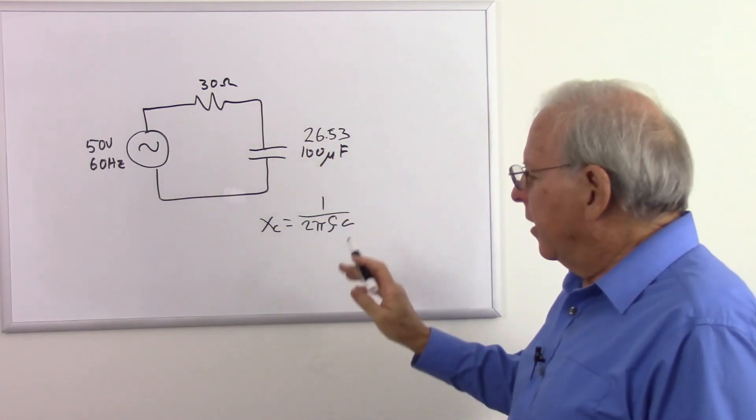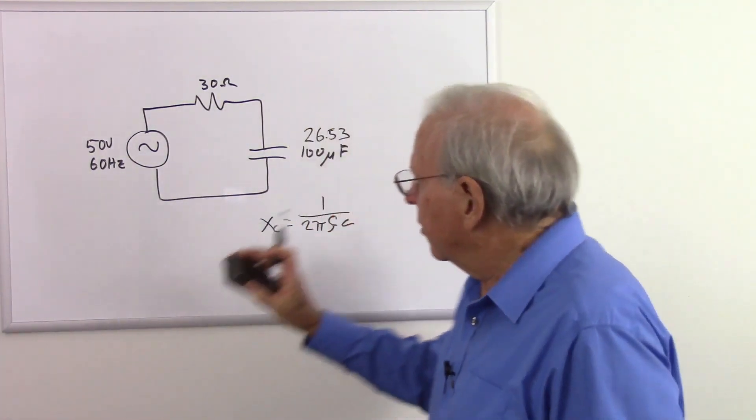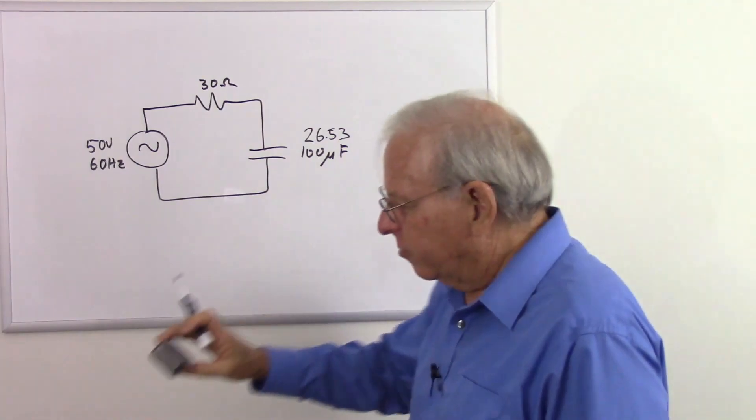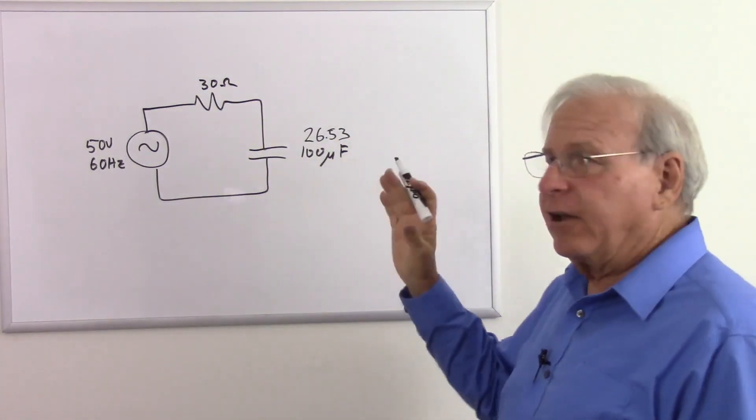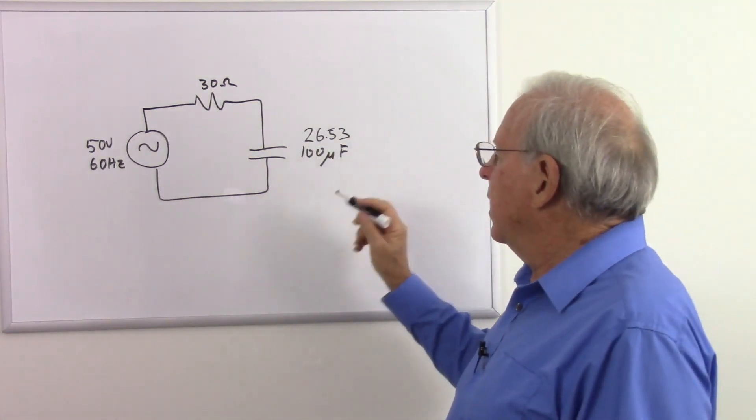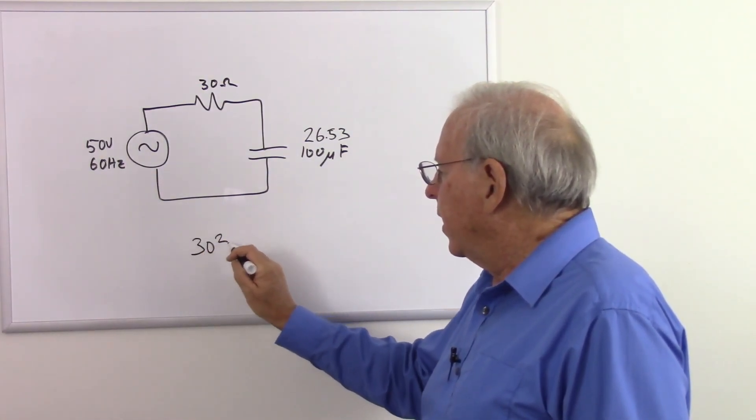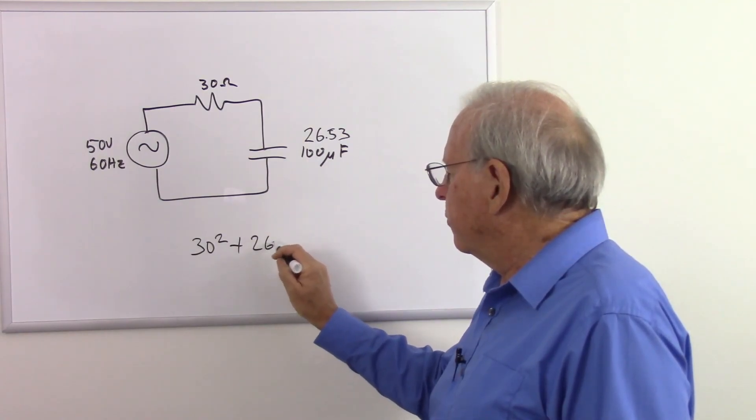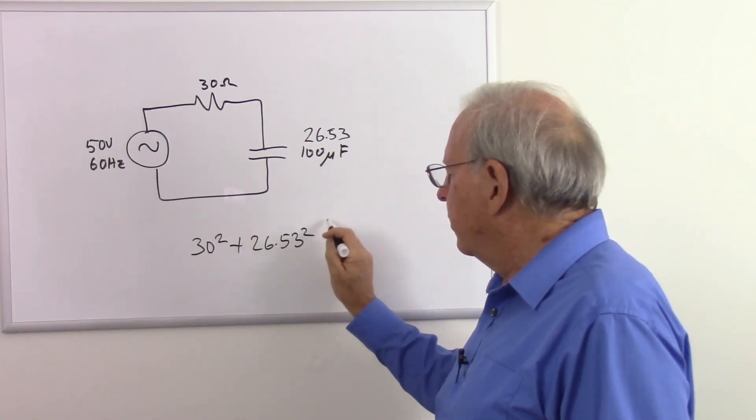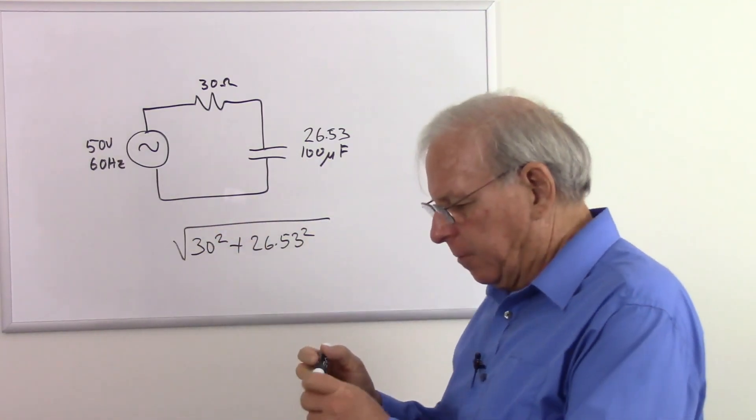Now what I need to do is find out what the voltage is across the capacitor and resistor. Now I need to find the impedance of the circuit, and that's going to be the Pythagorean theorem. So it's going to be 30 squared plus 26.53 squared. Take the square root of that. That will give me my impedance.